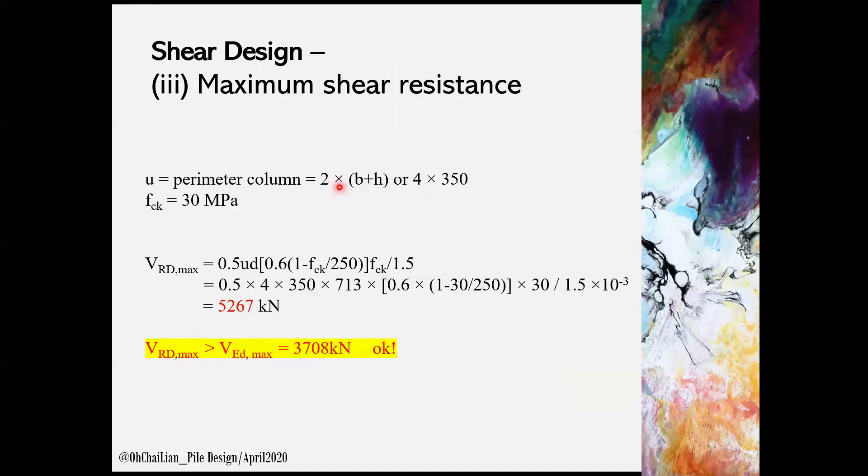Maximum shear resistance VRDc can be determined based on the shear at the column face. The recommended equation requires the parameter of column, effective depth, and the fck. The VRD max is compared and shall be greater than VED max.